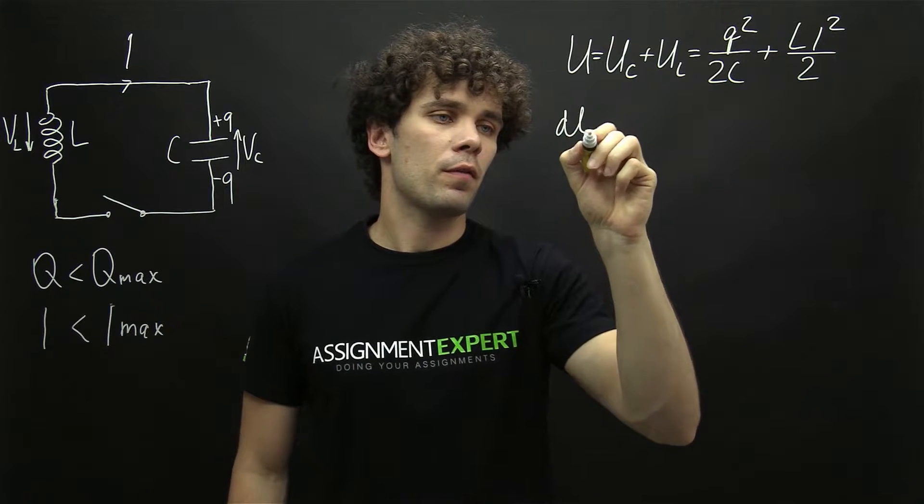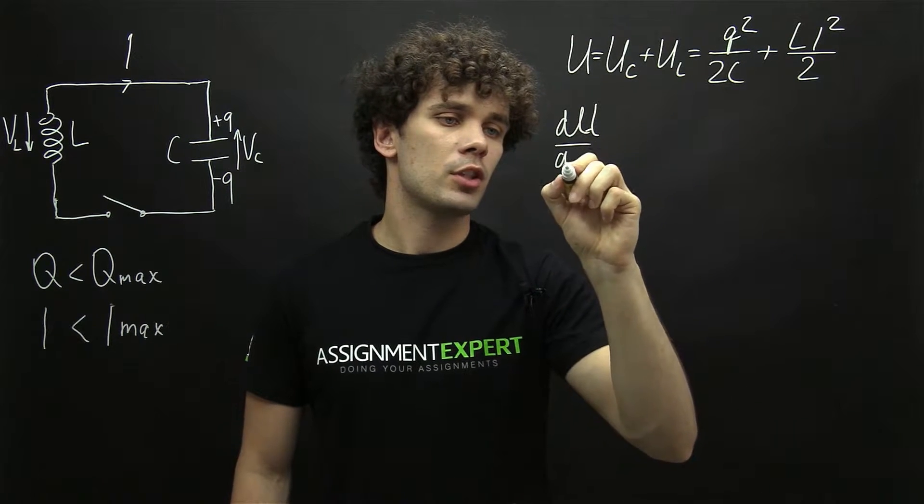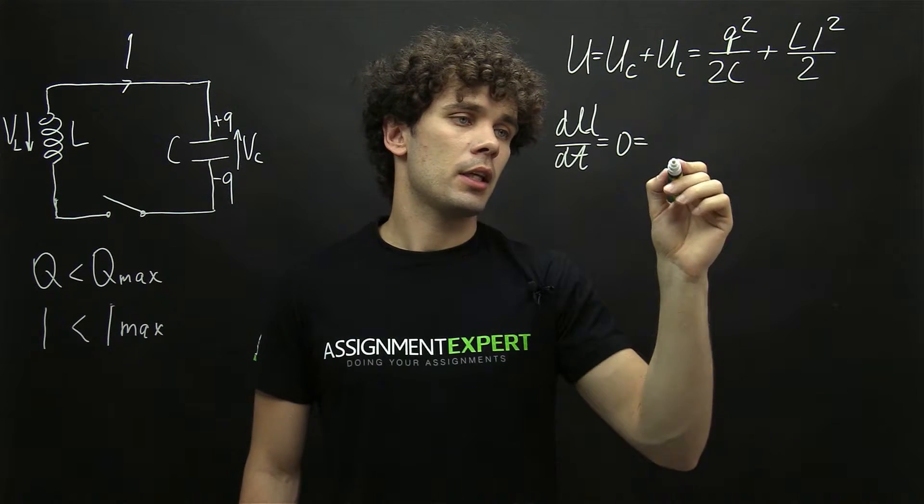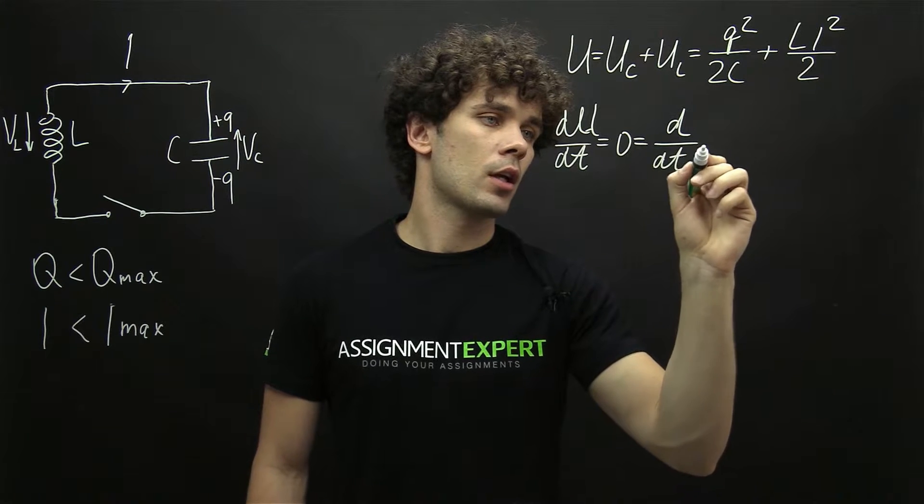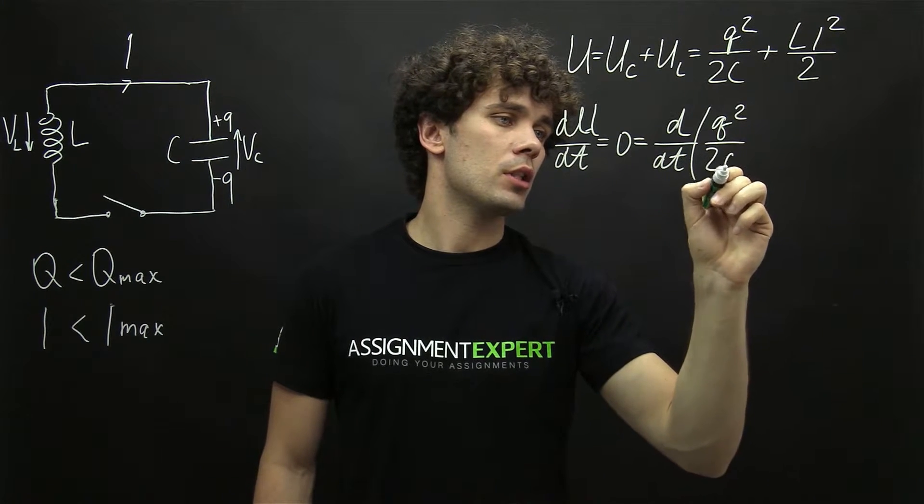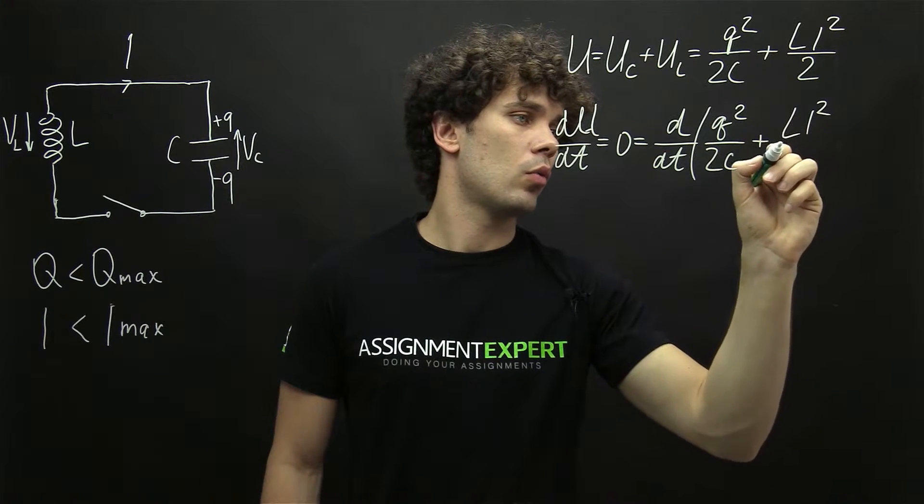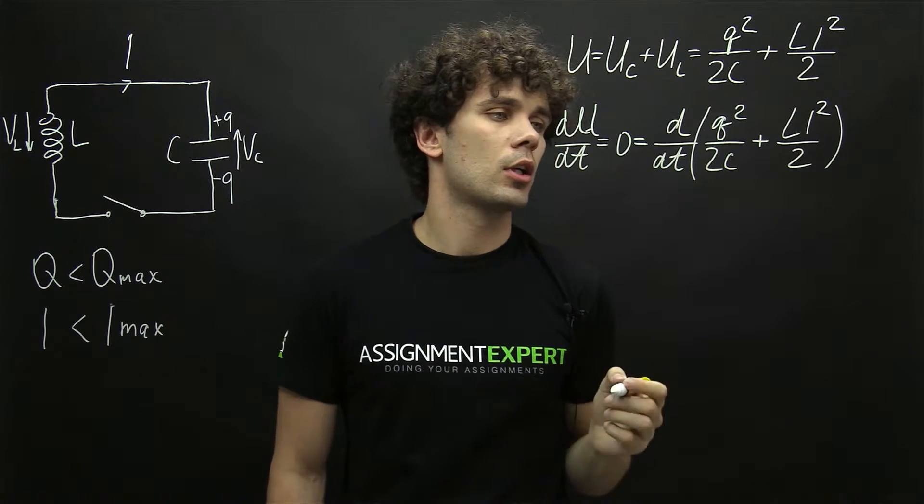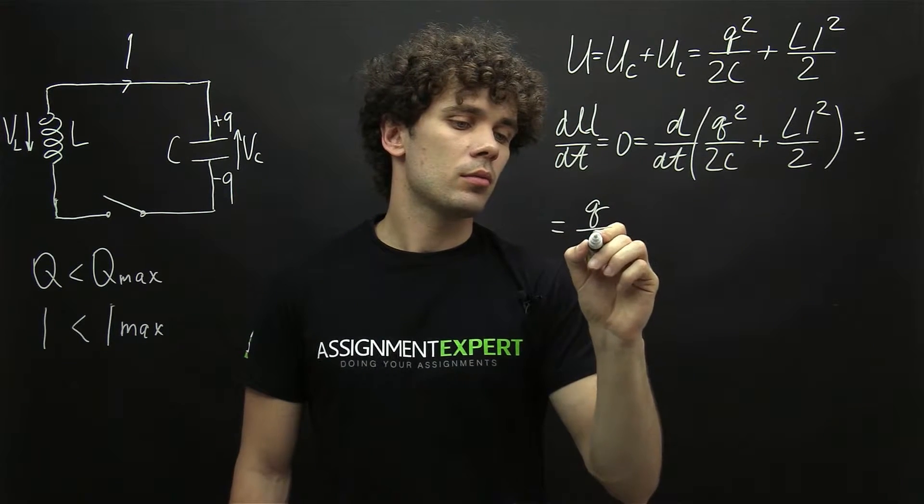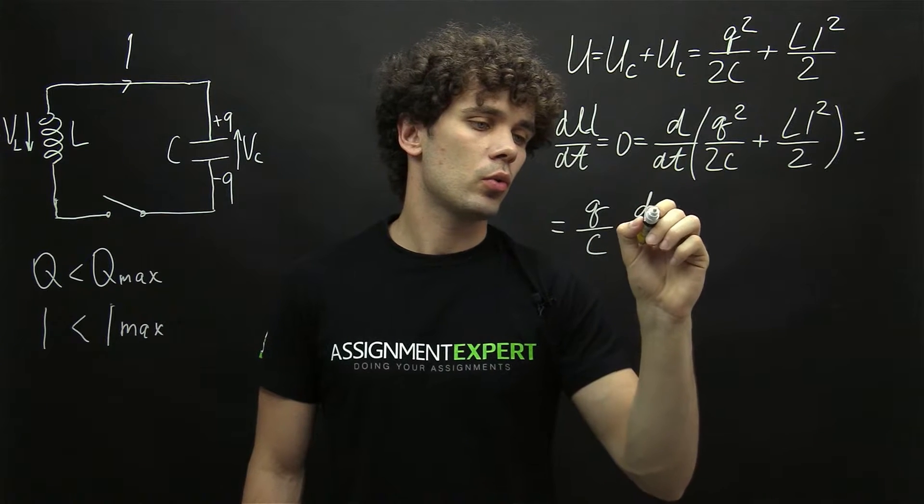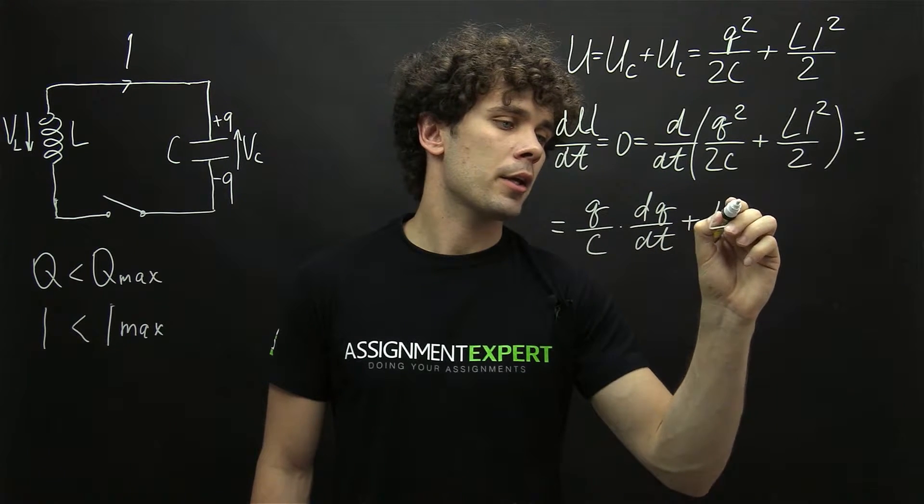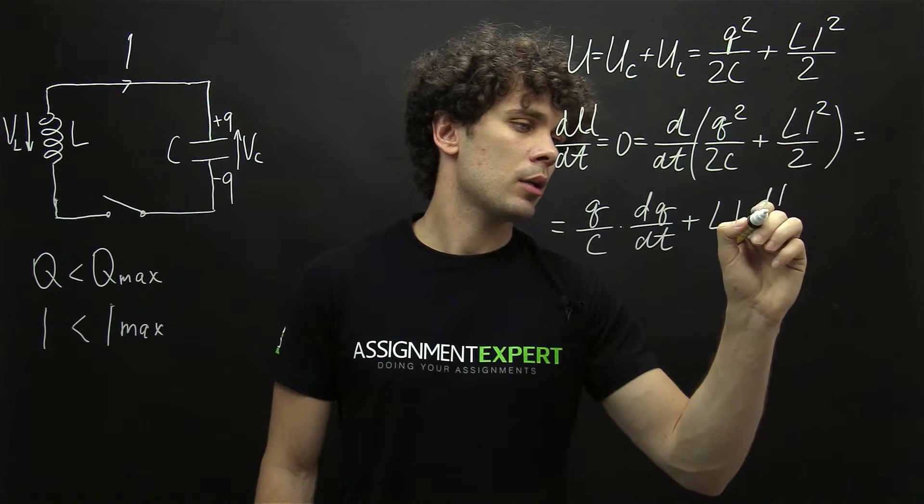Therefore derivative of energy by time dU over dt equals zero and equals derivative by time of this expression Q squared over 2C plus Li squared over 2. And here we obtain Q over C times dQ by dt plus Li times di by dt.